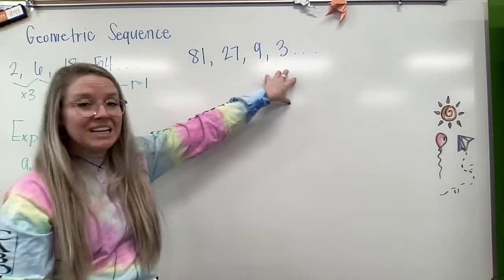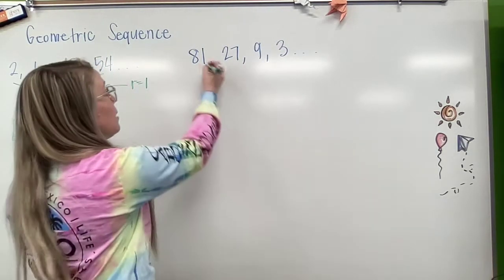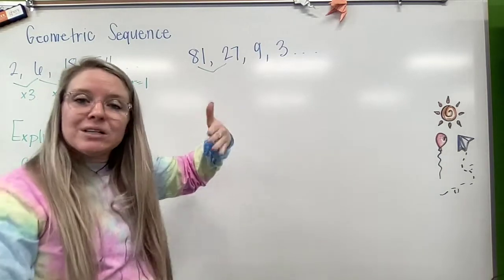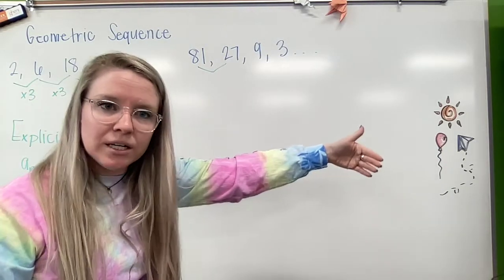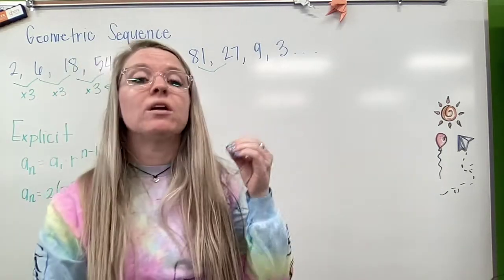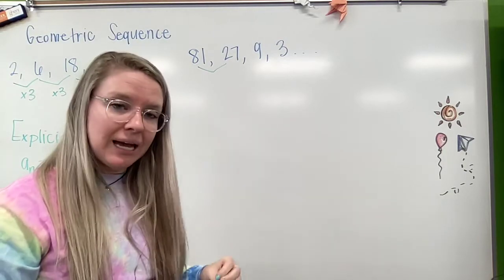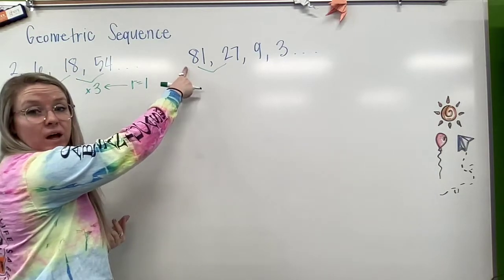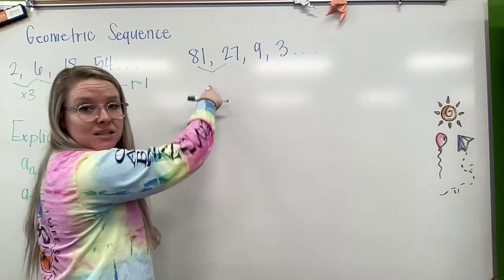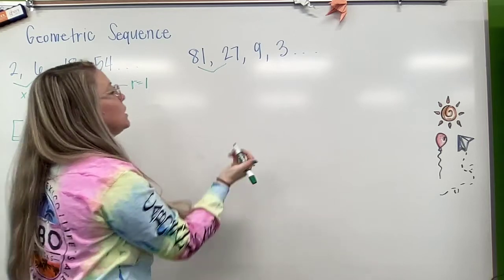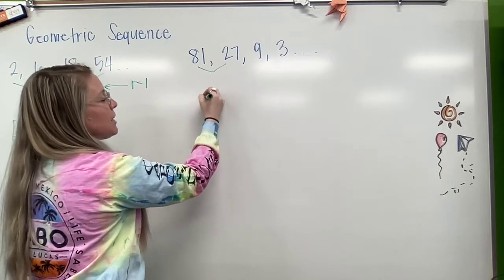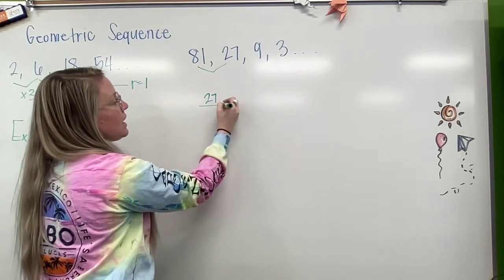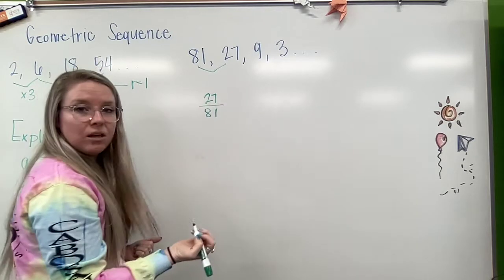Okay, we have another one here. This time, as we notice, our sequence is getting smaller and smaller. But with geometric, we are always multiplying as we go step to step. So somehow I'm taking 81 and I'm multiplying it by something to get 27. So what I'm going to do is I'm actually going to take 27 and I'm going to set it over 81.